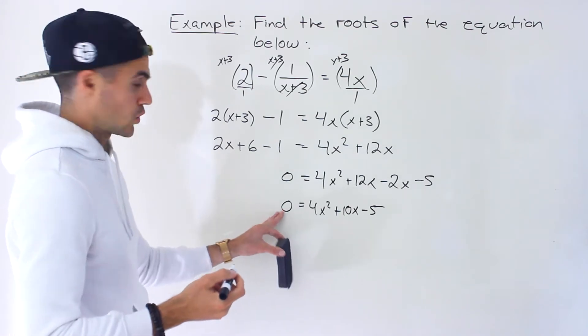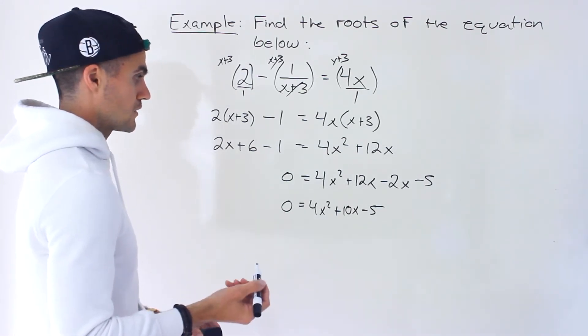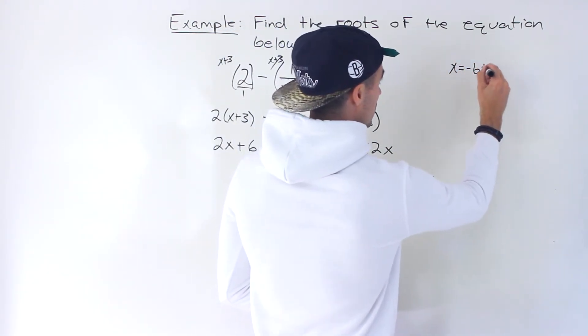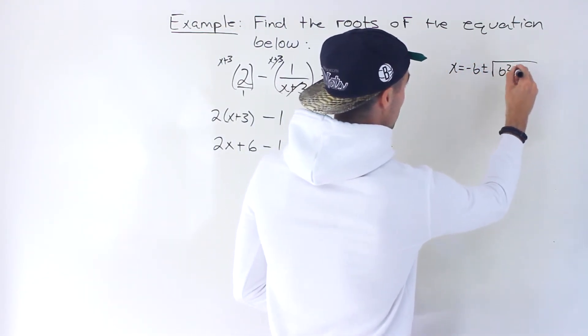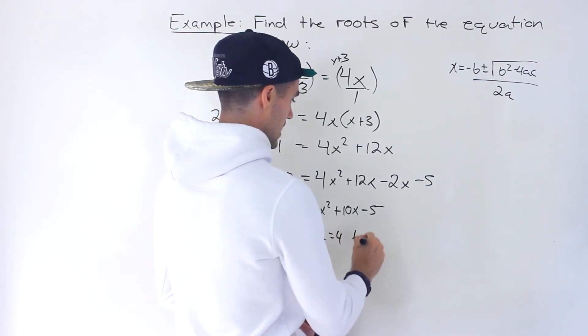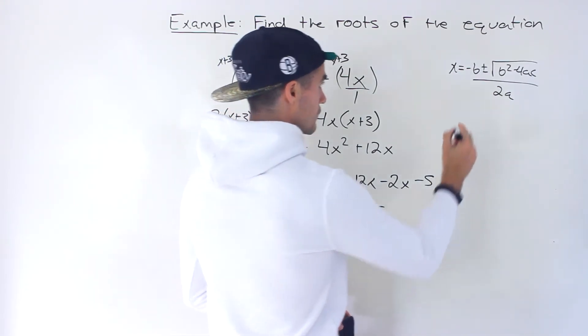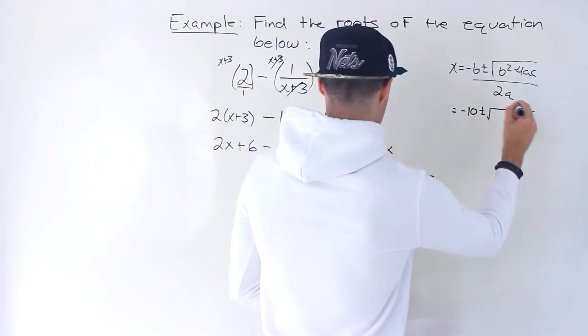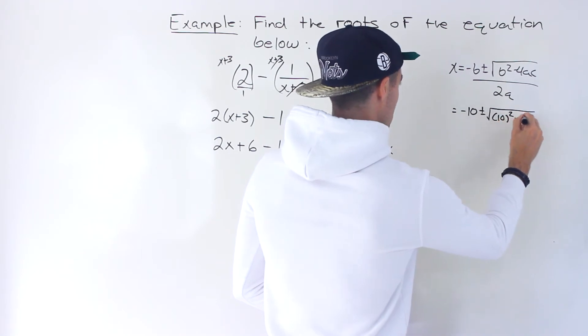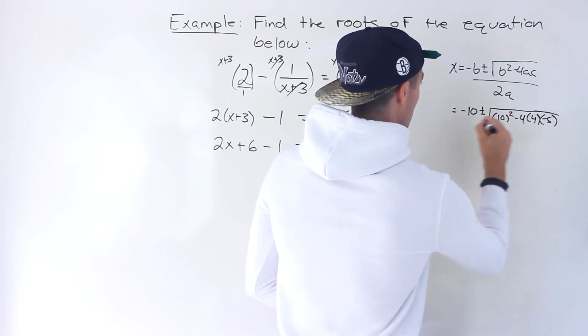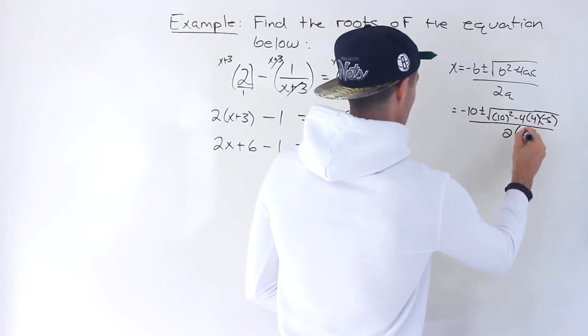So we end up with this quadratic equation. And I'm going to throw this into the quadratic formula. So the quadratic formula we know is this over here over 2a. So notice that in this case the a value is 4, the b value is 10, the c value is negative 5. So we'd end up with negative 10 plus or minus 10 squared minus 4 times the a value of 4 times the c value of negative 5 all over 2 times the a value of 4.